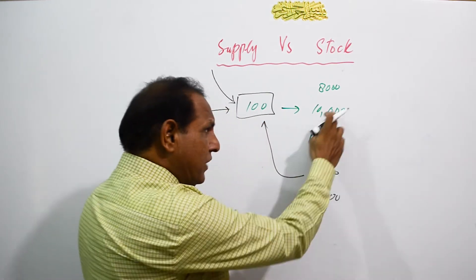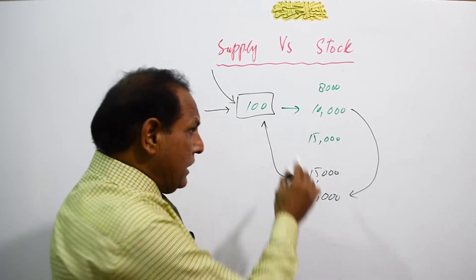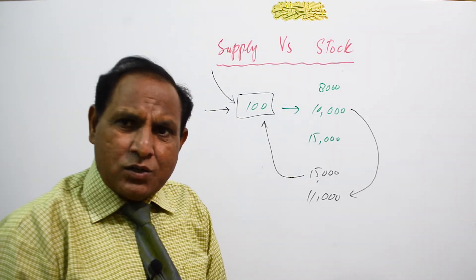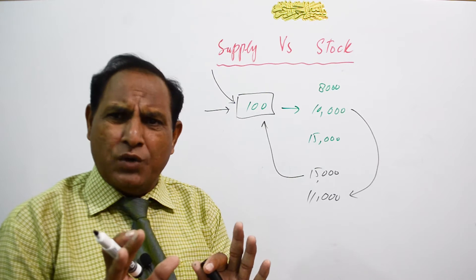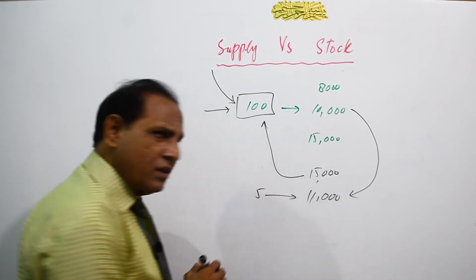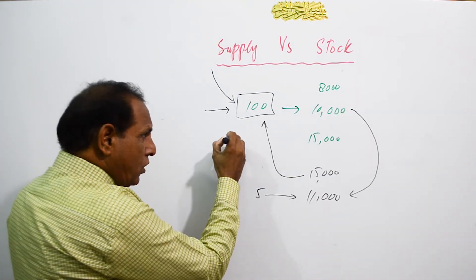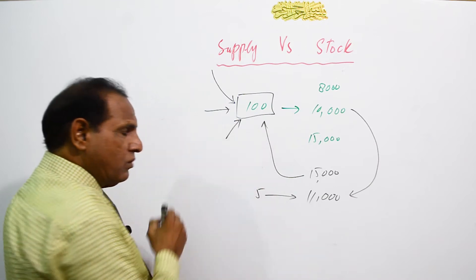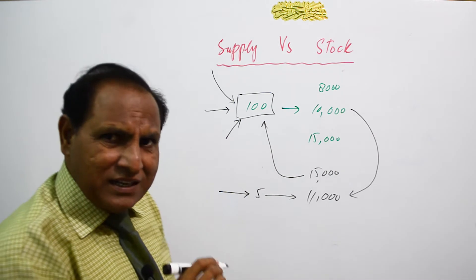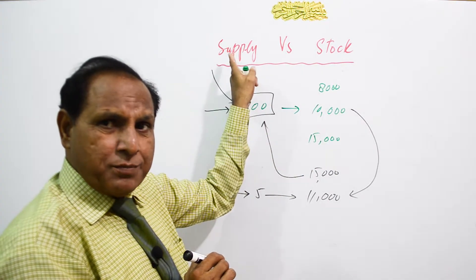Suppose the price of the mobile decreases and reaches 11,000 rupees — only 1,000 rupees would be my profit. At that price, I would like to sell only a few mobiles, suppose only five mobiles. So my stock is 100 mobiles but my supply is only five mobiles.